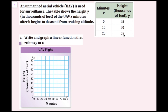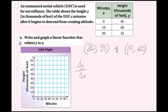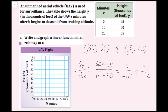To find the equation, I want to find the slope using change in y over change in x, which is y2 minus y1 over x2 minus x1. Setting that up: 60 minus 55 over 10 minus 20 gives 5 over negative 10, which simplifies to negative one half. That slope represents that for each minute, the UAV is reducing its altitude by one half of 1,000 feet — which is 500 feet per minute.